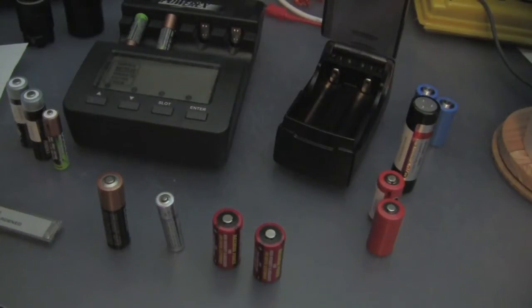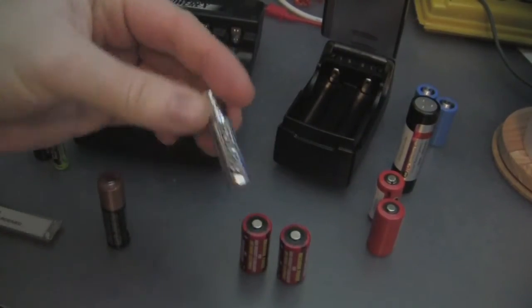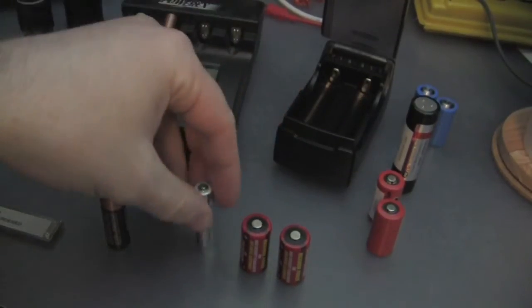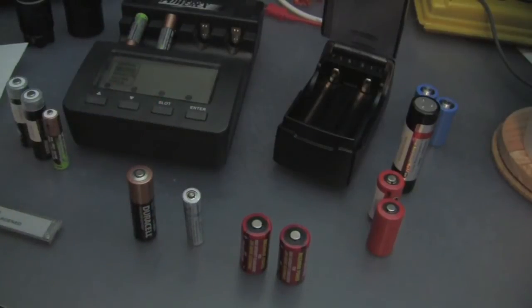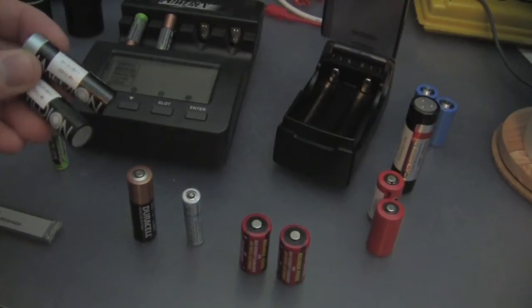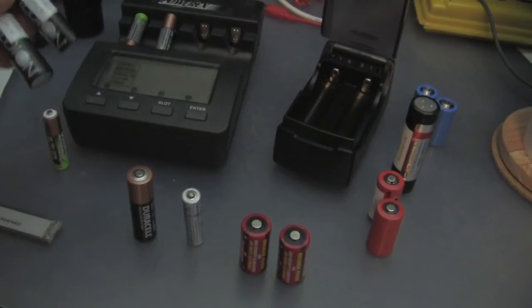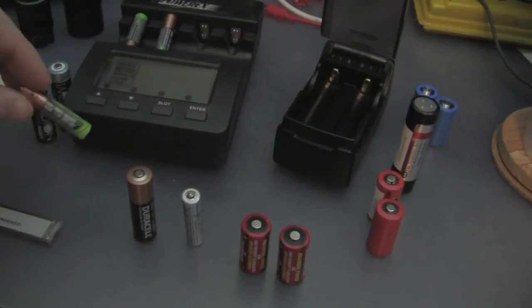All right, so battery types. We have your lithium primaries. This is a AAA-sized lithium primary. And we have an alkaline primary. In the rechargeable field, we have mostly nickel-metal hydride now. There is also some nickel-cadmium or Ni-cad batteries. The nickel-metal hydride, you'll see Ni-MH written on them.